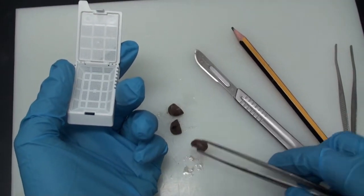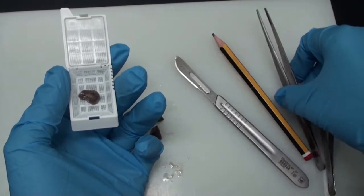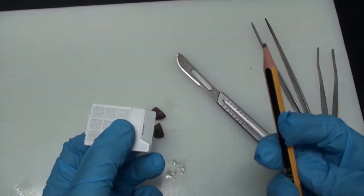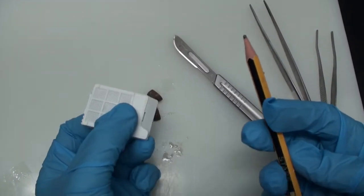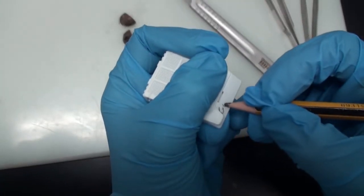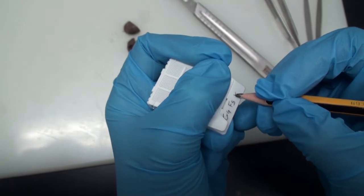Then we remove the part that we want to put sectioning on or process. Then we close the cassette. A very important step is to label your section for your specimen. And for that you need a pencil to be able to write on it.